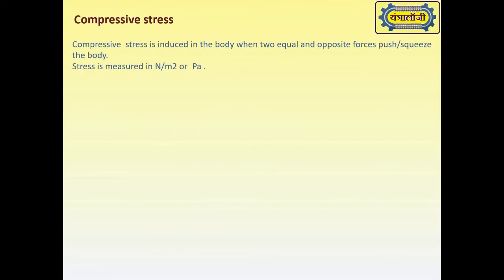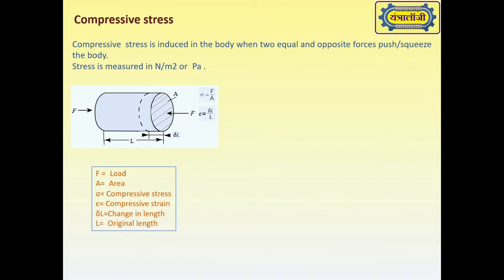Compressive stress is induced in a body when two equal and opposite forces push or squeeze the body. Stress is measured in newton per meter square or pascal. As shown in figure, the cylinder is squeezed by two equal and opposite forces F. Hence, compressive stress sigma equals force upon area, where A is the area perpendicular to the direction of force F.